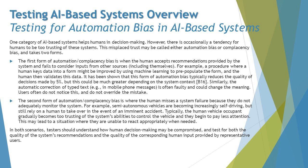The first form is automation complacency bias, where the human accepts recommendations provided by the system and fails to consider inputs from other sources, including themselves. Sometimes we blindly rely on what the AI-based system is recommending. For example, a procedure where a human keys data into a form might be improved by using machine learning to pre-populate the form, and the human then validates this data.